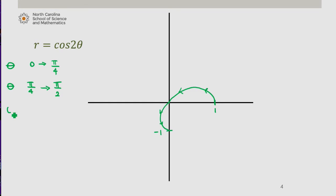When theta is between pi over 2 and 3 pi over 4, r ranges from negative 1 to 0. When theta is between 3 pi over 4 to pi, r ranges from 0 to 1.